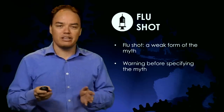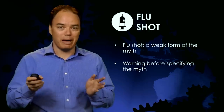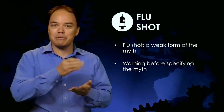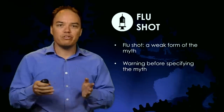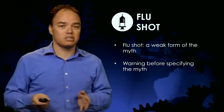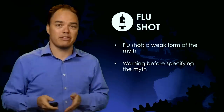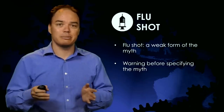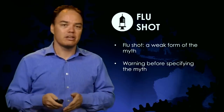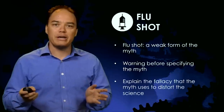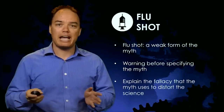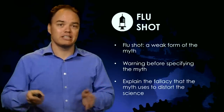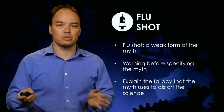Before repeating a myth, you need to warn people that you're about to mention it. This can be something as simple as saying 'a common myth is,' or if your debunking is visual, use visual cues to make it obvious that it's a myth. This puts people on guard so they're less likely to be influenced. The second way of presenting a weak form of the myth is to explain why the myth is wrong — typically by explaining the fallacy that the myth uses to distort the science.